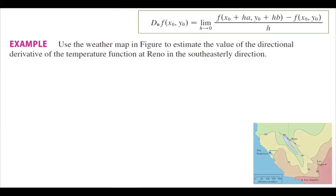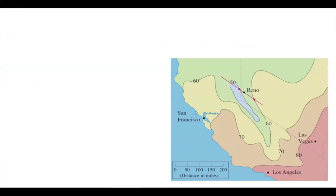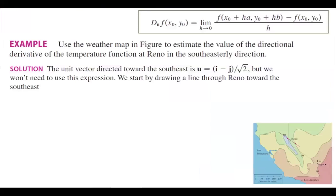In this example, use the weather map in the figure to estimate the value of the directional derivative — the rate of change of the temperature function at Reno in the southeasterly direction. Looking at the map, this is Reno, and there is a line passing through Reno toward Las Vegas. We also have Los Angeles and San Francisco. Based on the question, we're looking at the southeasterly direction. The unit vector is u = (i minus j) divided by square root of 2, where square root of 2 is the magnitude.